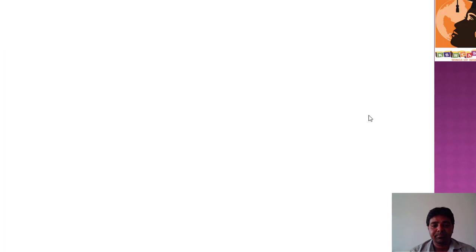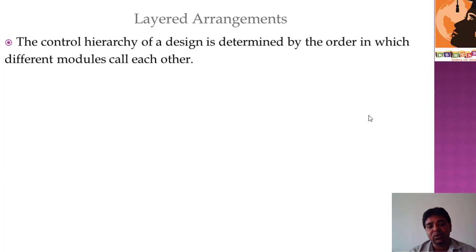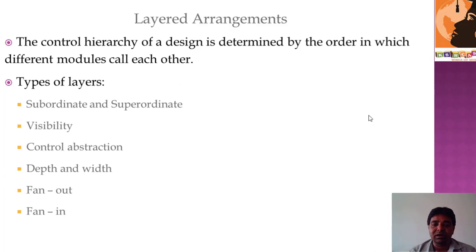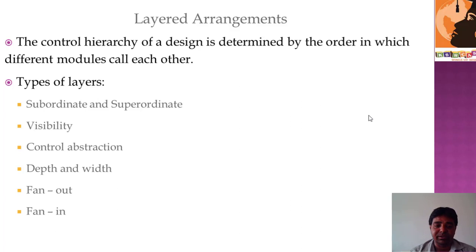We also have layered arrangements — how all modules are arranged in a hierarchical way. The design involves a hierarchy with types such as subordinate, superordinate, depth and width, fan-in and fan-out, and control abstraction. These layers are set at various levels of hierarchy according to the needs of the project. There is a small diagram showing how this hierarchical arrangement looks.